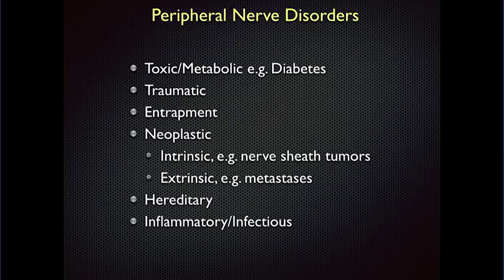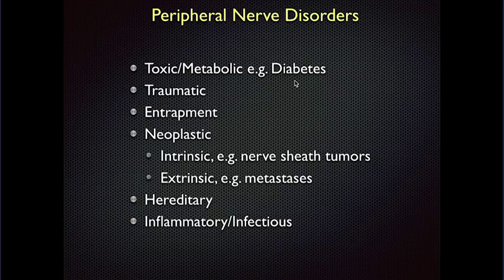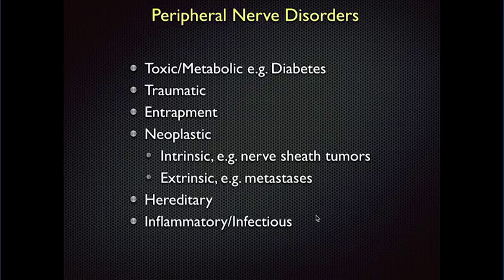A number of disorders will cause nerve problems, including diabetes — probably the most common. We're all aware of peripheral neuropathy. Typically we see end-organ manifestations like Charcot foot and muscle denervation change, but don't often see direct nerve abnormalities in diabetic neuropathy. You also have trauma, entrapment syndromes, tumors, hereditary neuropathies — I'll show a couple of examples — and infectious or inflammatory nerve disorders.